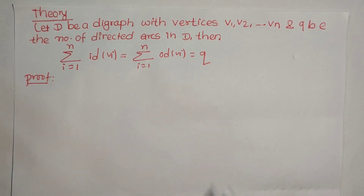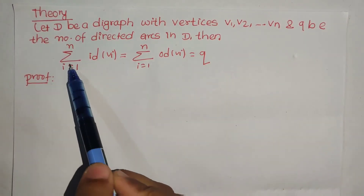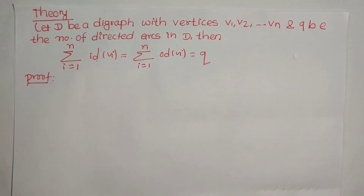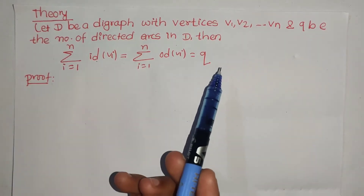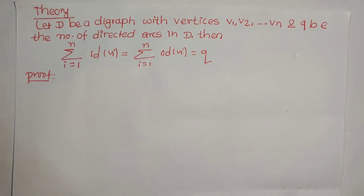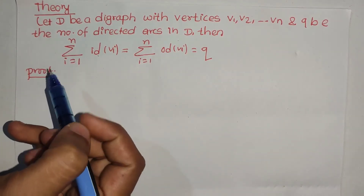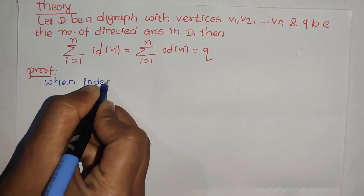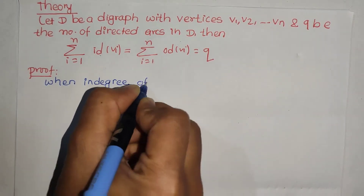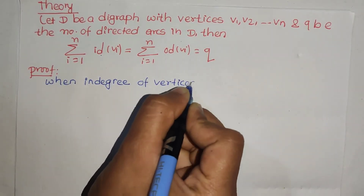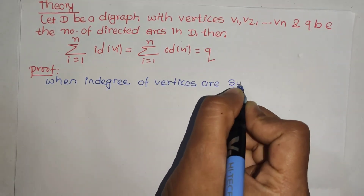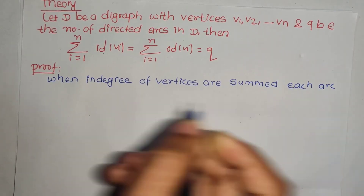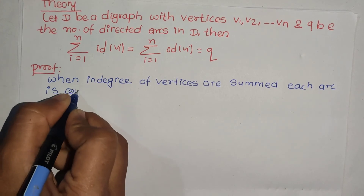Hello everyone. I have a property: the in-degree sum is equal to the out-degree sum, which is equal to the number of arcs. The sum of in-degrees is equal to the sum of out-degrees, which is equal to the number of edges in that diagram. I will prove that each arc is counted exactly once.